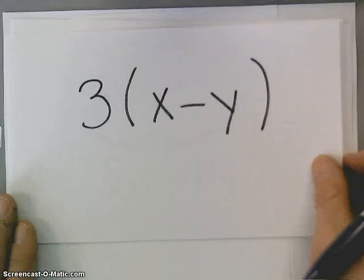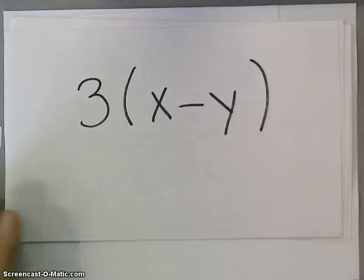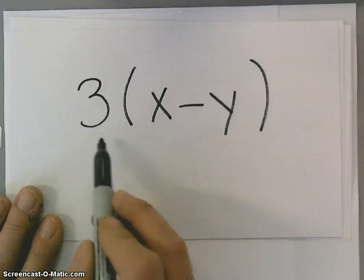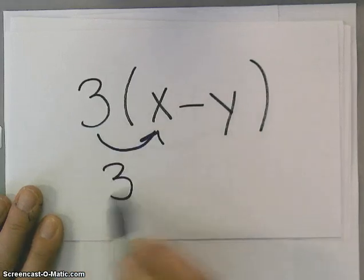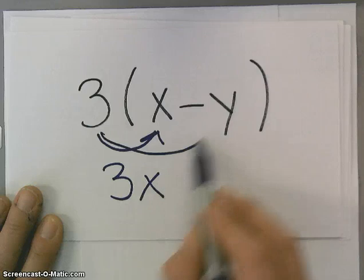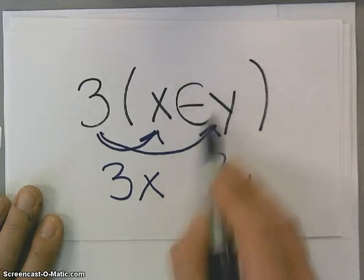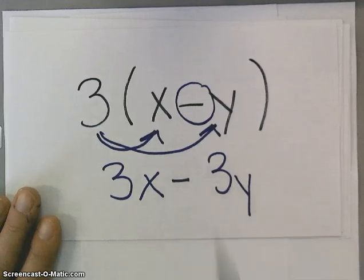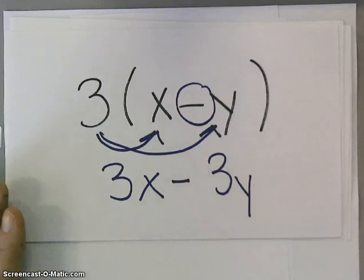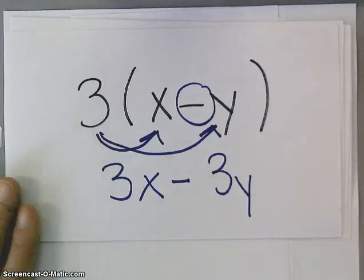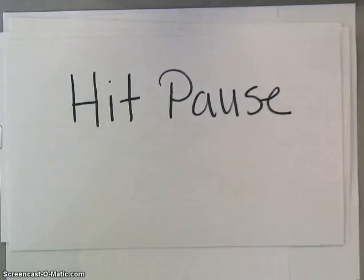And our last example, just using the distributive property. 3 is on the outside. 3 times x is 3x, and 3 times y is 3y. And I have this subtraction sign there, so it is 3x minus 3y. Now, I'll take a moment, hit pause, and answer the on-your-own questions.